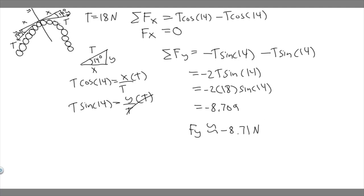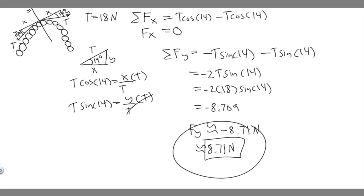Keep in mind they want the magnitude of the force. The negative sign just indicates direction, so when they ask for magnitude, they just want the positive value — the absolute value. The net force is only in the y direction since the x components cancelled, so the answer is simply 8.71 newtons. That's the net force and your answer to this problem.